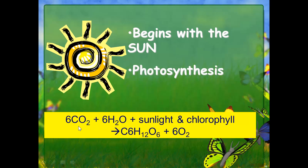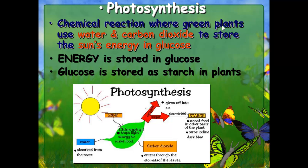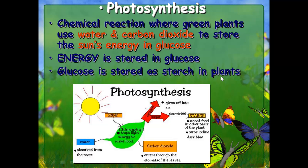You have carbon dioxide (CO2), water (H2O), and sunlight. Those give you glucose — which is what the plant uses for food — and a byproduct of oxygen (O2). Photosynthesis is the chemical reaction where green plants use water and carbon dioxide to store the sun's energy in glucose. Energy is stored in glucose, which is then stored as starch in the plants.